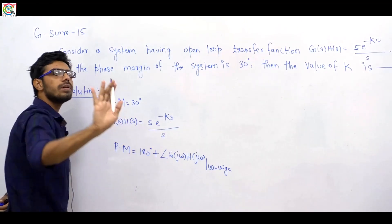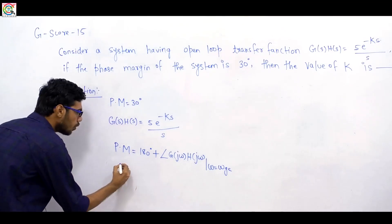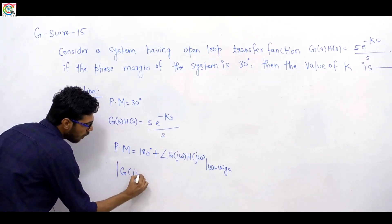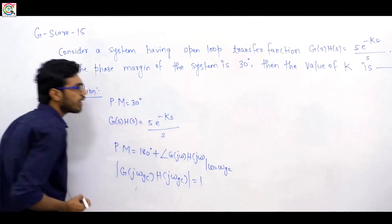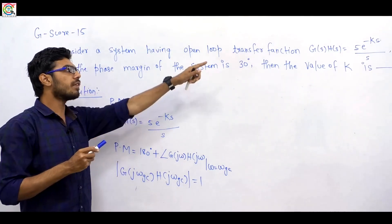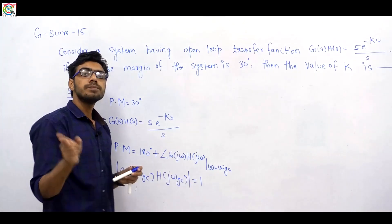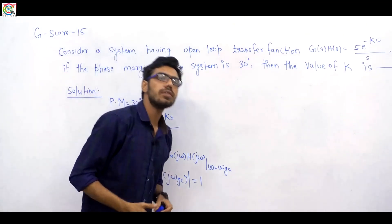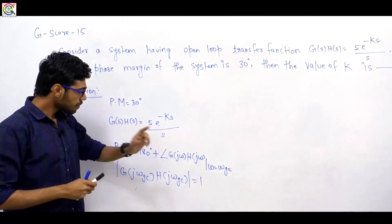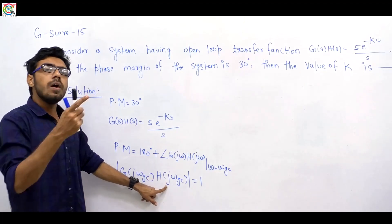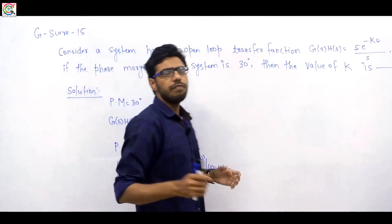Whenever we do frequency domain analysis, the first step is to substitute s = jω. So: |G(jω_gc)·H(jω_gc)| = 1. This means the magnitude of the open loop transfer function at the gain crossover frequency equals 1. Once we find that frequency, we find the angle of the open loop transfer function at that frequency, add it to 180°, and we get the phase margin.